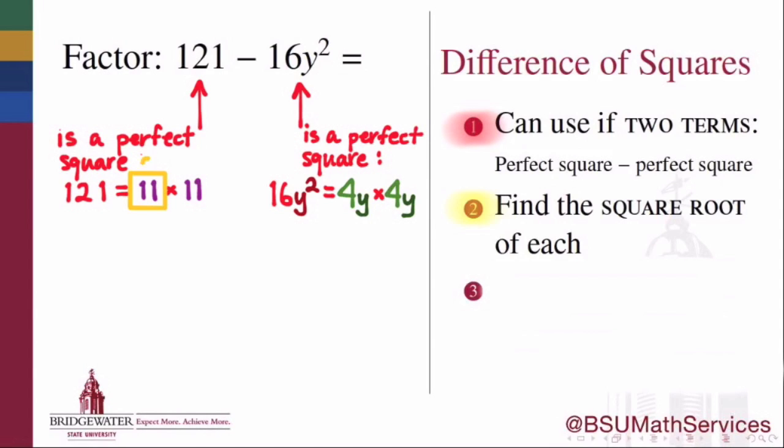The second step, and we've already done this, is to identify for each of the two terms what is the square root. In other words, answer the question, of what is this term a perfect square?